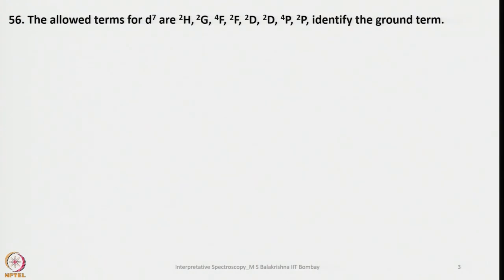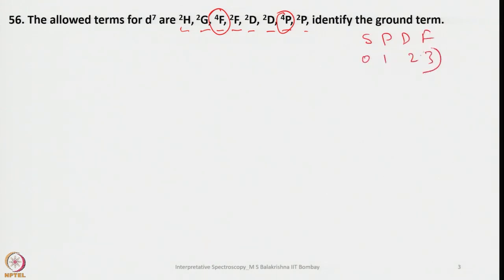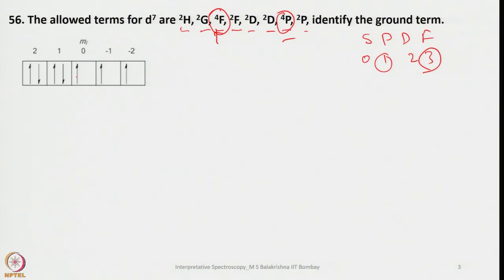Another question: the allowed terms for D7 are ²H, ²G, ⁴F, ²F, ²D, ²D, ⁴P, ²P. Among them, identify the ground term. By inspection, choose the one with the highest spin multiplicity (2S+1). If two terms share the same 2S+1, then select the one with the highest L value. Taking S=3/2, 2S+1 equals 4. The ground state electronic arrangement gives L=3 (F), so we can also solve this by writing the electronic arrangement and finding 2S+1 = 2×(3/2)+1 = 4.